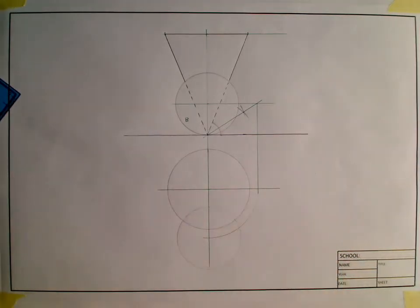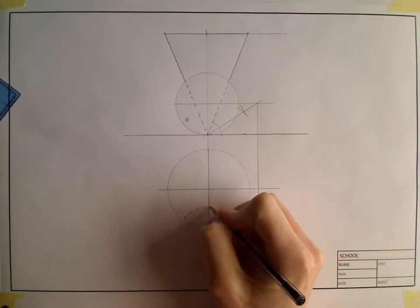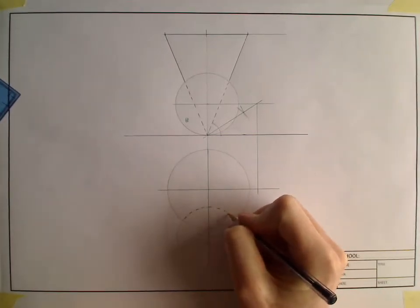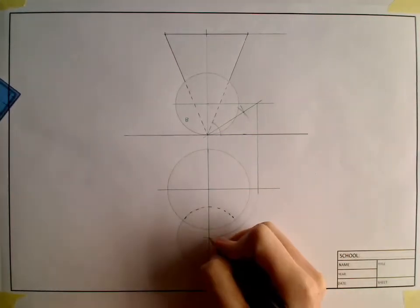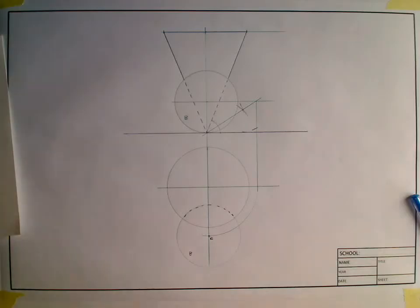This here is going to be dashed because the top of the cone is going to hide the part of the sphere. The next part of this question: draw the projections of a right cylinder C and show the projections of the point of contact between the cone and the cylinder.